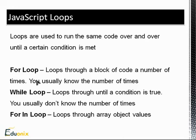Essentially, loops all do the same thing. But there's usually a bit of a difference when choosing which loop to use. For instance, the for loop is usually used when you know the exact number of times that it's going to run, while the while loop is usually used when you don't know the number of times. And the for in loop, like I said, is usually used with array objects.